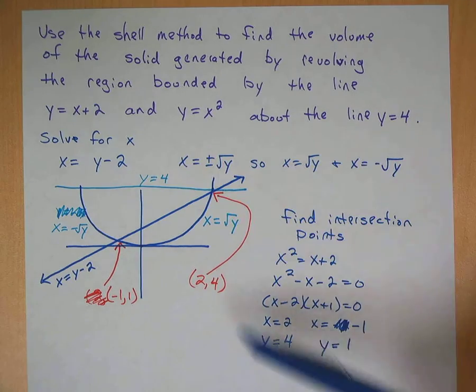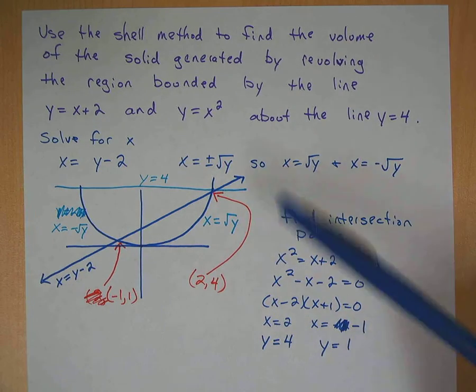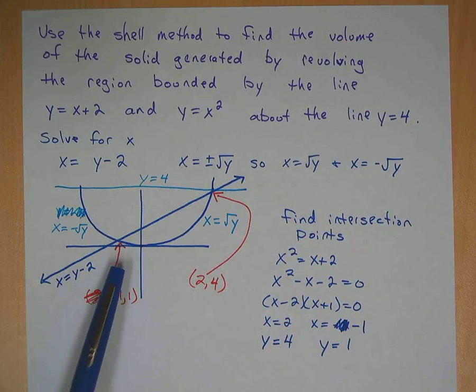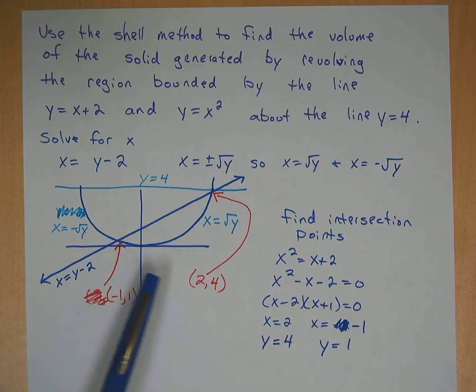Plug into either one of these and you get your answer. Plug a 2 in here, 2 plus 2 is 4. Plug a negative 1 in here, negative 1 and 2 make 1. So you get your intersection points here. This is negative 1, 1, and this one is 2, 4.